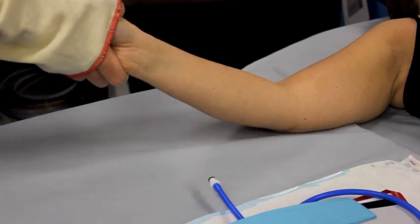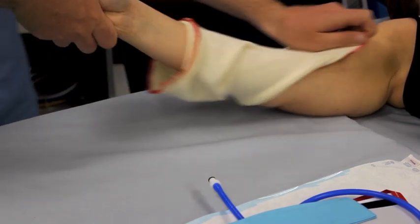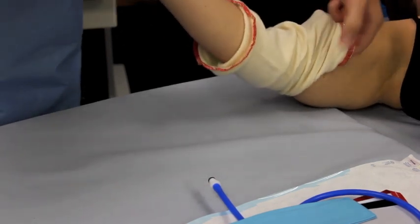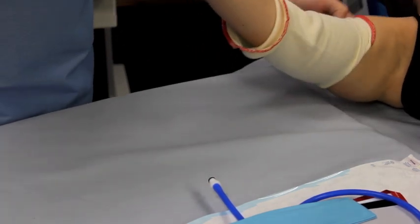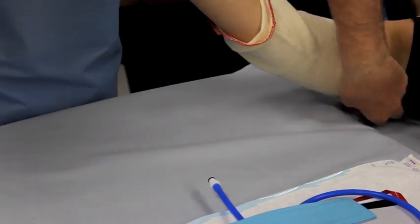It has been suggested in published literature that under padding should be used below the tourniquet cuff. This can help reduce wrinkling, pinching and shearing of the tissues.